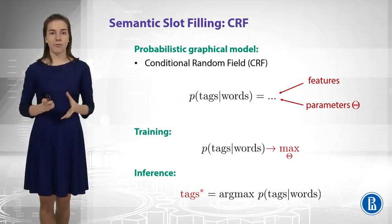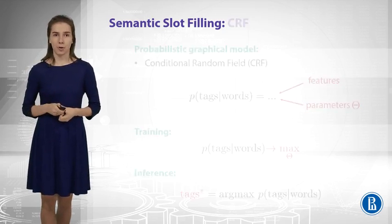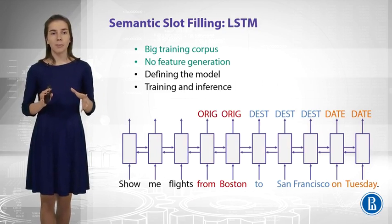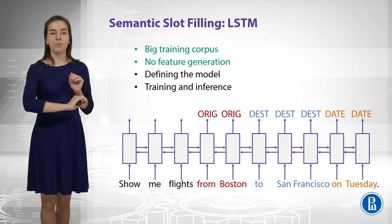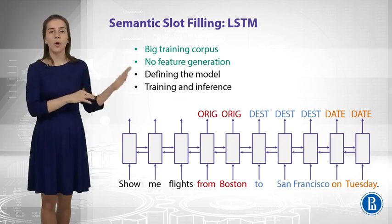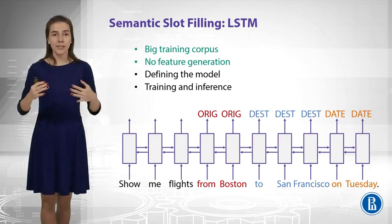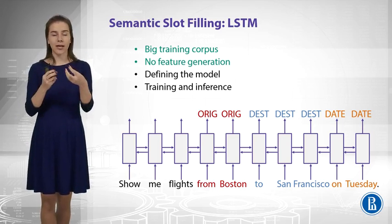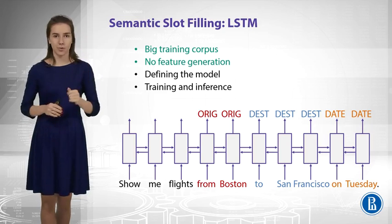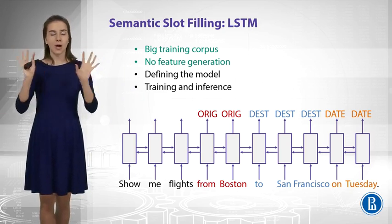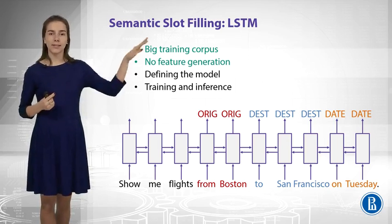This is just the general framework — you have some parameters, you train them, and then you apply your model. A similar thing happens for the deep learning approach. There, you also have these stages, but usually you do not have the stage of feature generation. Instead, you just feed your sequence of words, as-is, to a neural network. You feed your words as one-hot encoders — vectors that have only one non-zero element corresponding to the word's index in the vocabulary, and lots of zeros. You feed these vectors to a complicated neural network with a complex architecture and many parameters, and then apply this network to your test data to get the tags.